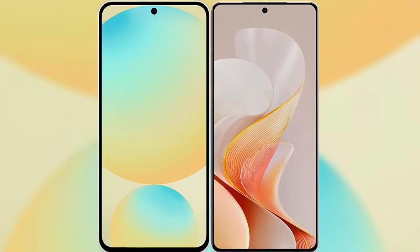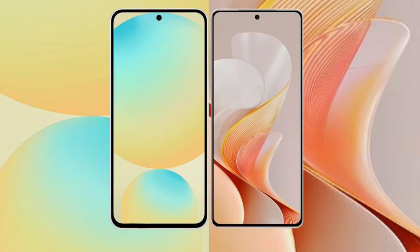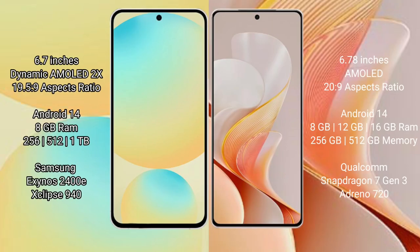I will compare the new Samsung Galaxy S24 FE with Vivo S19. Samsung Galaxy S24 FE has a 6.7-inch Dynamic AMOLED display with a 19.5:9 aspect ratio. Vivo S19 has a 6.78-inch AMOLED display with a 20.9:9 aspect ratio.